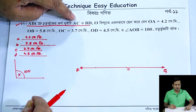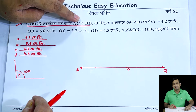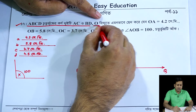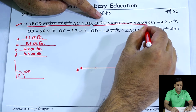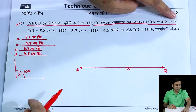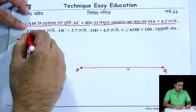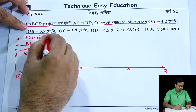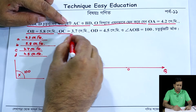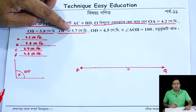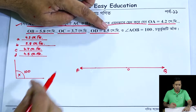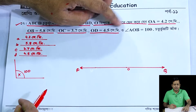OB equal to 5.8 cm, OC equal to 3.7 cm, OD equal to 4.5 cm.